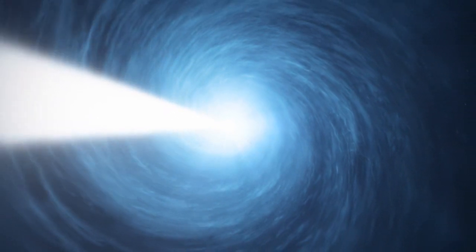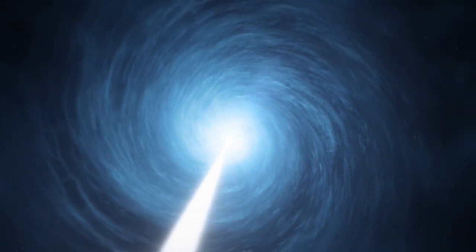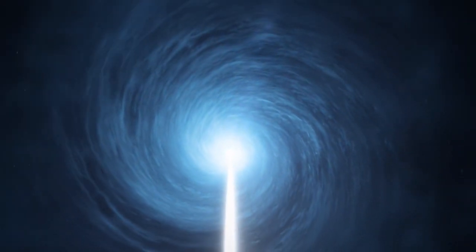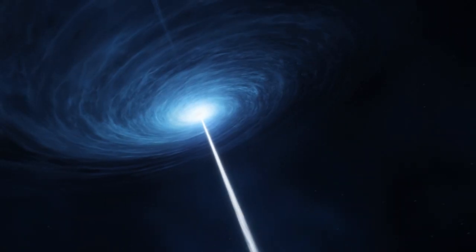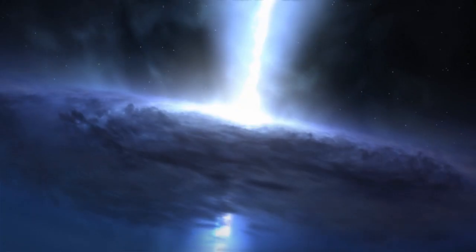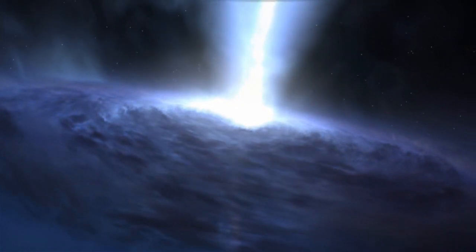Messier 106 has a supermassive black hole at its center. Although this is true for most galaxies, this black hole is particularly active and hungry, gobbling up nearby material at a startling rate.